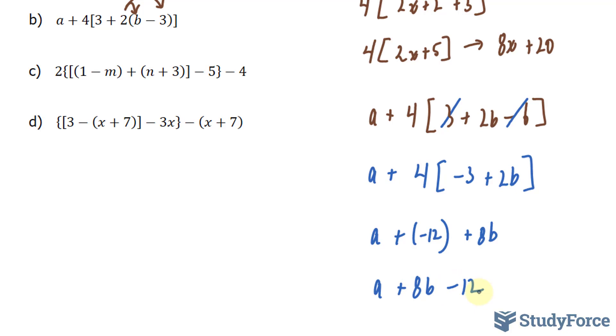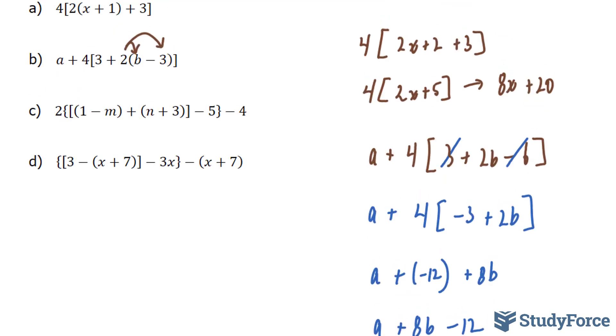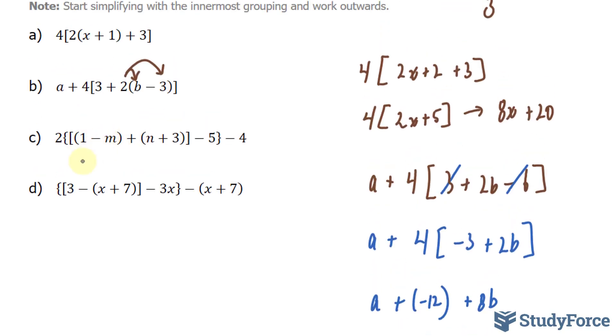Moving on to C. This one's slightly more complicated because we have curly brackets. We have (1 - m) and (n + 3). Those can't be simplified further. So we focus on this larger unit. We can get rid of these brackets. If you do, you'll end up with 1 + 3, which is 4, and -m + n, which can't be combined.